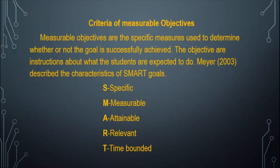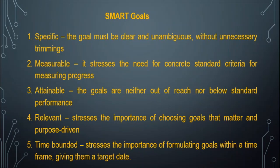There are criteria of measurable objectives. Measurable objectives are specific measures used to determine whether or not the goal is successfully achieved. The objectives describe what the students are expected to do, characterized by SMART goals — which stands for Specific, Measurable, Attainable, Relevant, and Time-bounded. Specific: the goal must be clear and unambiguous without unnecessary limits. Measurable: it stresses the need for concrete standard criteria for measuring progress. Attainable: the goals are neither out of reach nor below standard performance. Relevant: it stresses the importance of choosing goals that matter and are purpose-driven. Time-bounded: it stresses the importance of formulating goals within a timeframe, giving them a target aim.